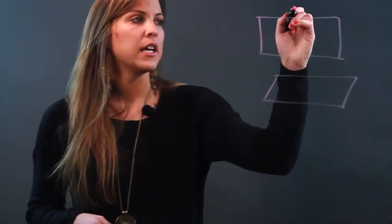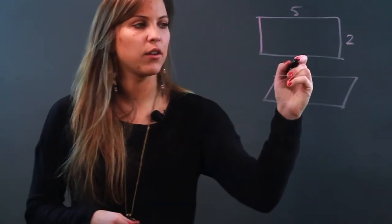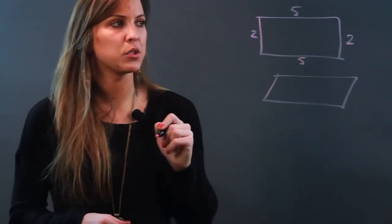So if I know that this length is 5 and this length is 2, well then by definition of a rectangle, this length is also 5 and this width is also 2.